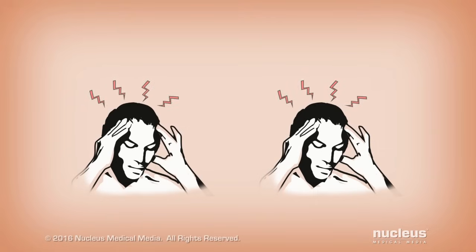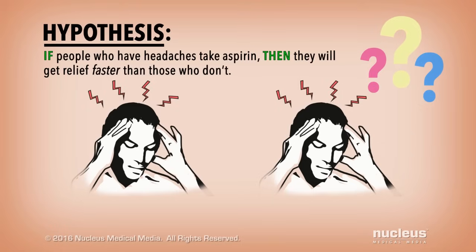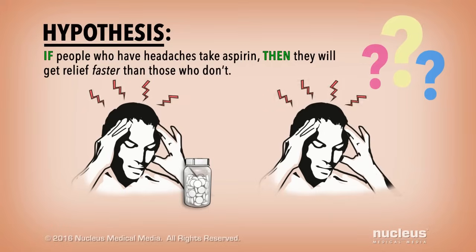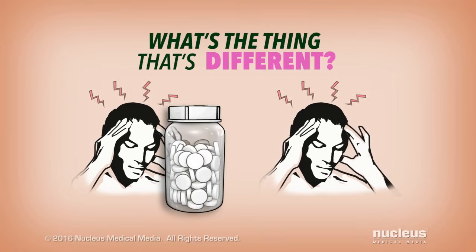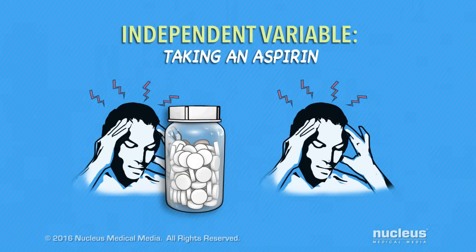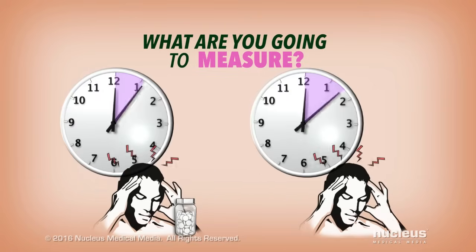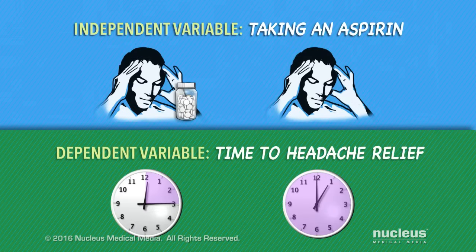Here's another example — see if you can figure it out. This time, the hypothesis is that if people who have headaches take aspirin, then they will get relief faster than those who don't take aspirin for headaches. So, what's the thing that's different? The independent variable is whether or not somebody is taking an aspirin. Then, what are you going to measure? You're measuring how long it takes for their headache to go away — that's the dependent variable.